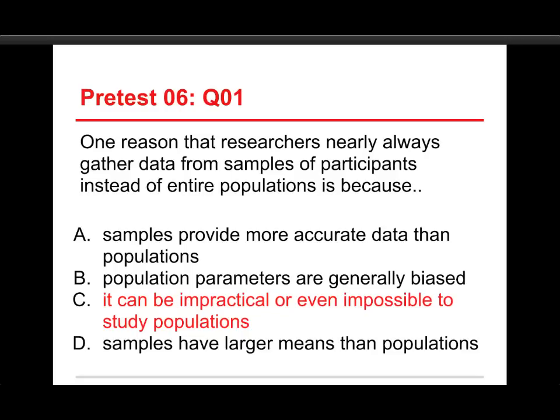Let me talk about the other ones very briefly. A, samples provide more accurate data than populations — that is never the case because a population is larger and a population is fully representative of itself, so it's going to be more accurate. B, population parameters are generally biased — bias usually means a sample statistic that is attempting to estimate or tell you about a population parameter; a population parameter just is what it is. And D, samples have larger means than populations — that's just nonsense.